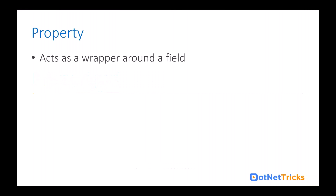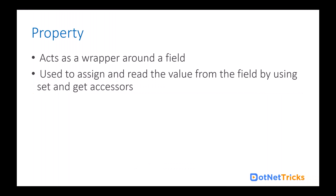Property. A property acts as a wrapper around a field and is used to assign and read the value from a field by using set and get accessors. The set accessor is used for setting the value to a field and the get accessor is used to fetch the value from that field.